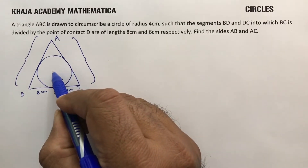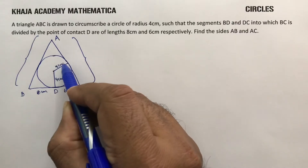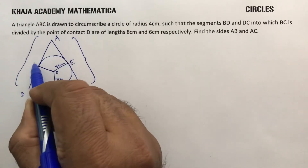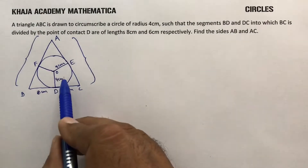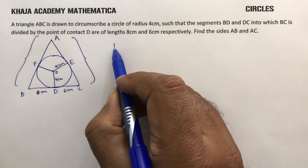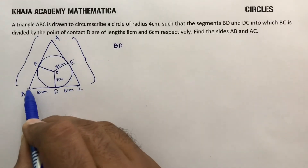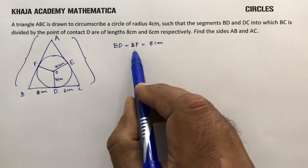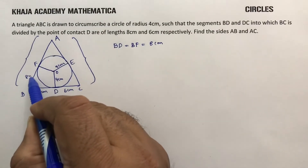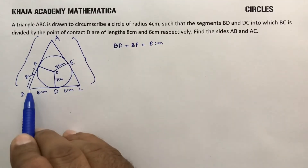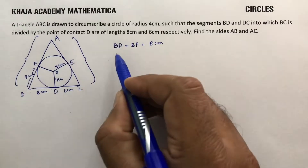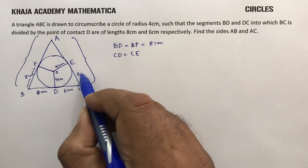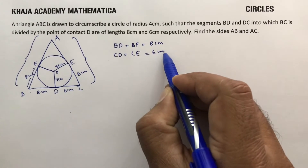I will use circle properties. I will draw the radius of 4 centimeters and consider the center as O. The tangent points are D, E, and F. Since BD is 8 centimeters, BD equals BF equals 8 centimeters, because tangents drawn from an external point are equal. Similarly, CD equals CE equals 6 centimeters, because the tangent is drawn from external point C.